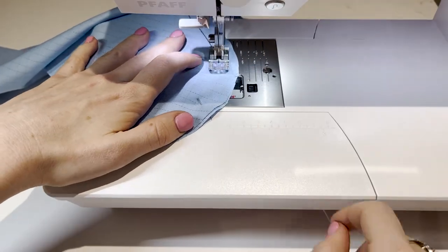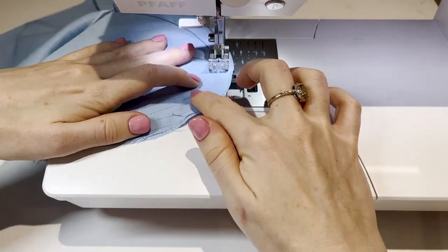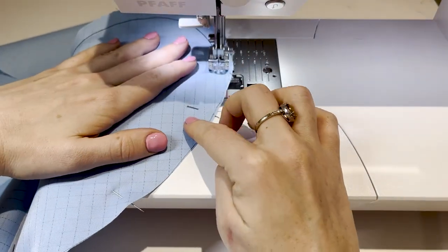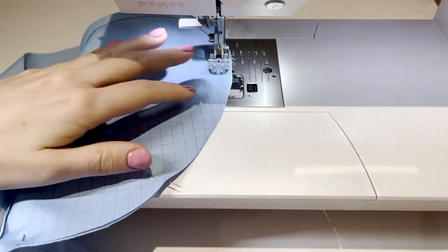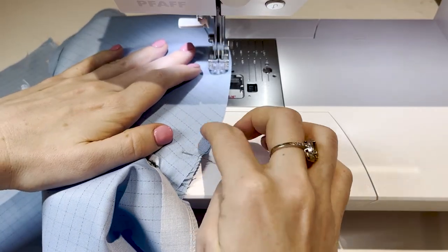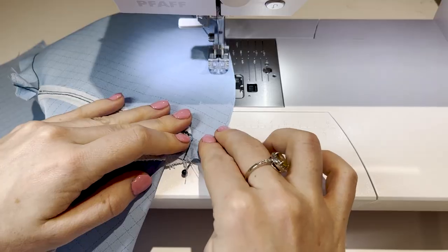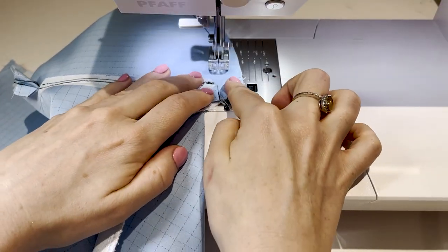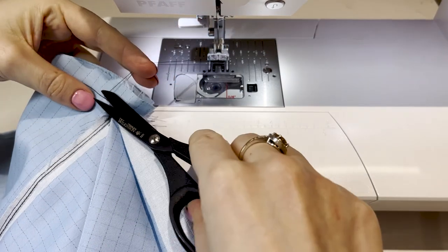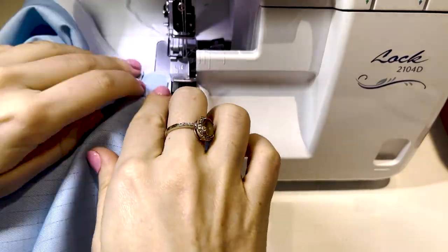Seam allowances aren't that important here, you just want to get a nice even stitch all the way to the edge. Once again, bring it in very close to the previous stitch without going over. Trim all threads.